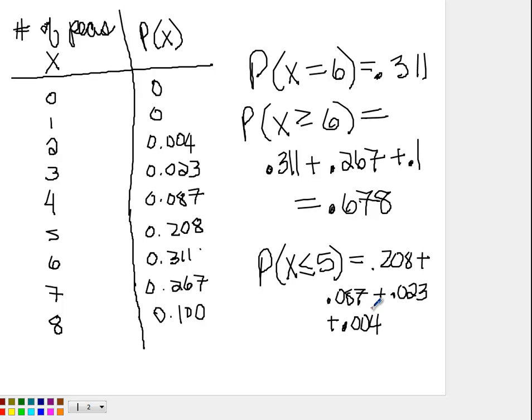So, let's add these up. And I get 0.322. Okay, so you can find different probabilities from this table.